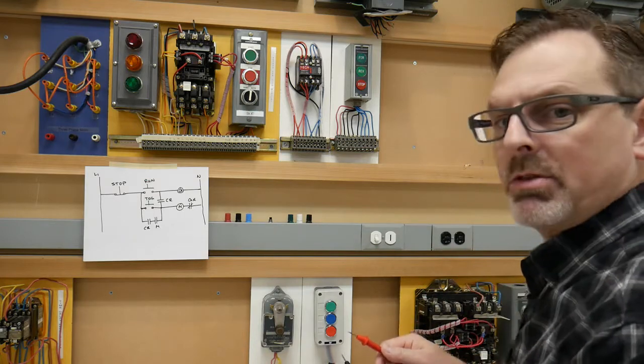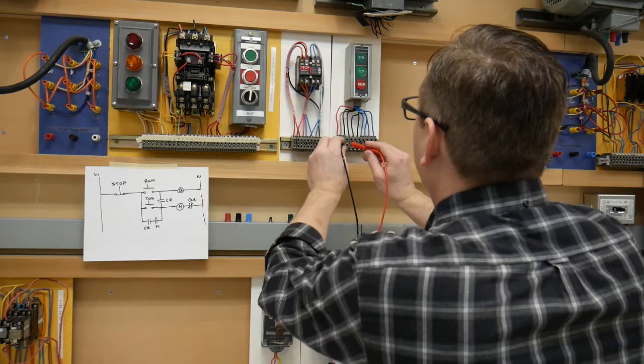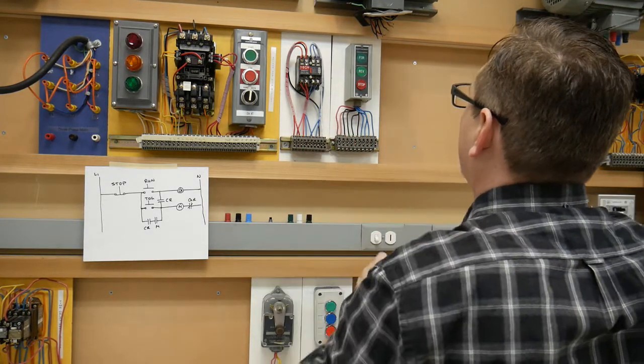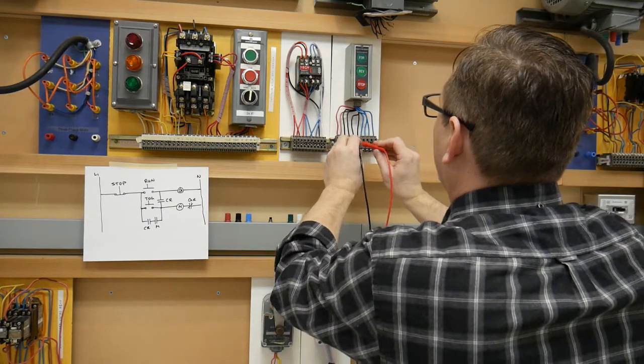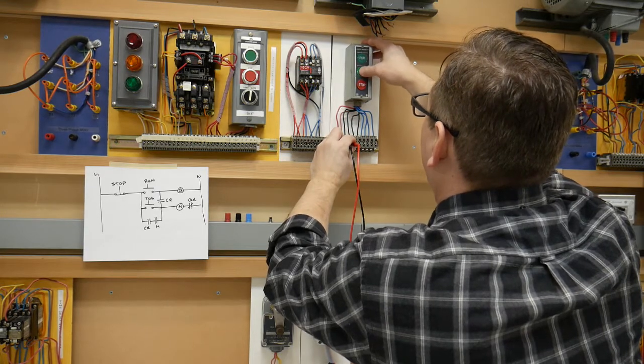So I've got my meter set at continuity. Now I need to find my stop push button, which happens to be the red there. I'm going to go to these next set of black ones. Now these are normally closed. They're labeled that way.